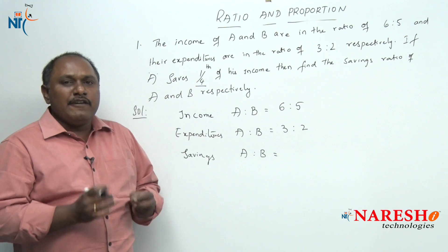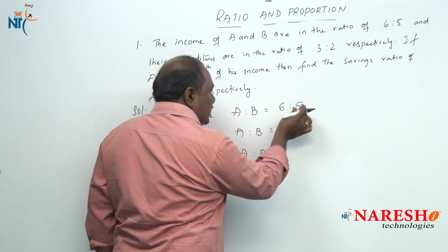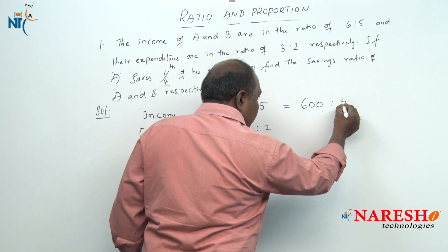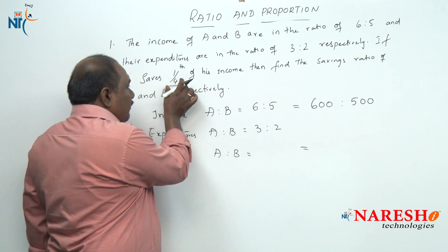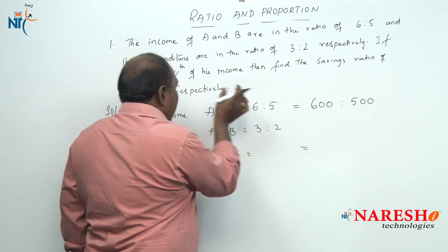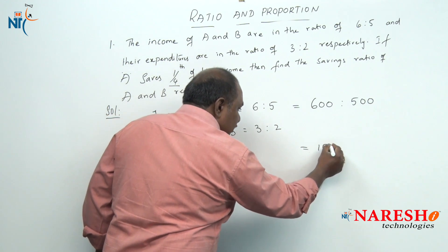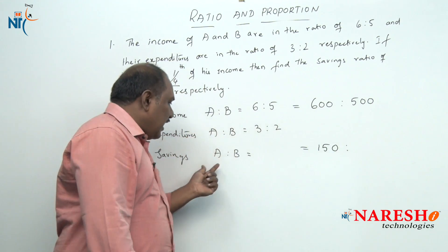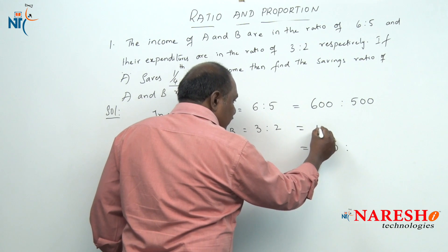How to answer this question in a simple way? For the income ratio of 6 is to 5, let us assume the income of A is 600 rupees and the income of B is 500 rupees. A saves one-fourth of his income, and one-fourth of 600 is 150. So the income of A is 600, his savings is 150, and his expenditure is 600 minus 150, which is 450.